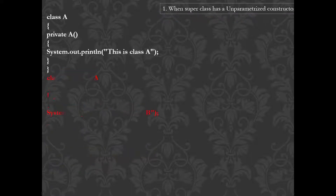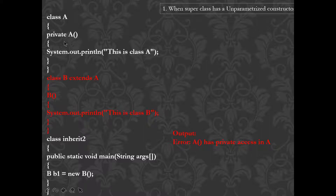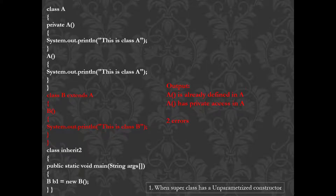One important note: if the super class constructor has been made private, then accessing it from a subclass will throw an error — 'A has private access in A' — because private members cannot be accessed by others. Also, you should not try to overload with one private and one non-private constructor of the same signature, as that gives an error saying 'A is already defined'.